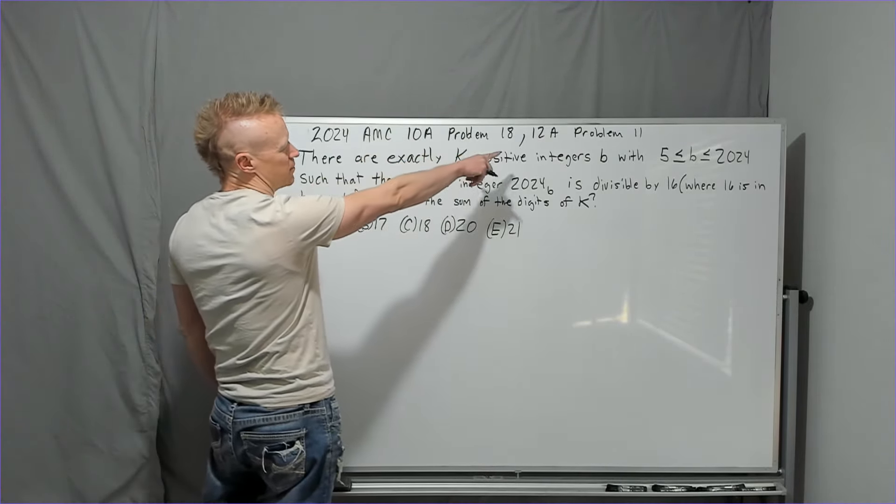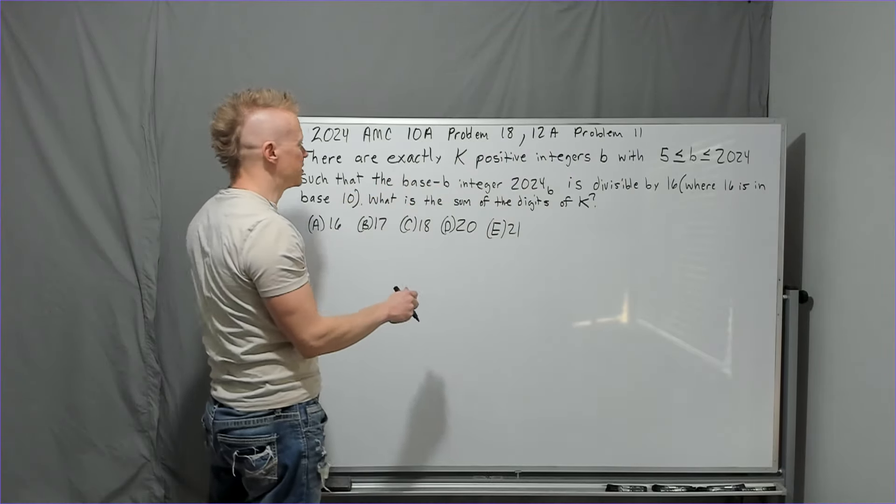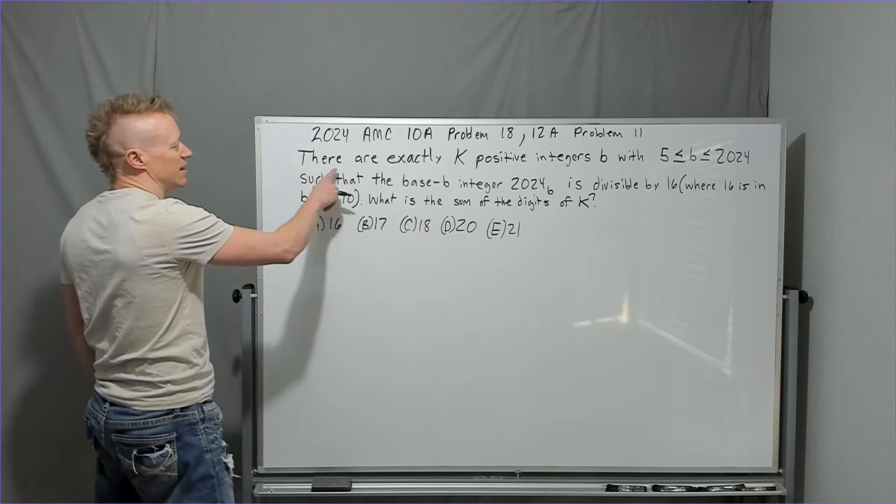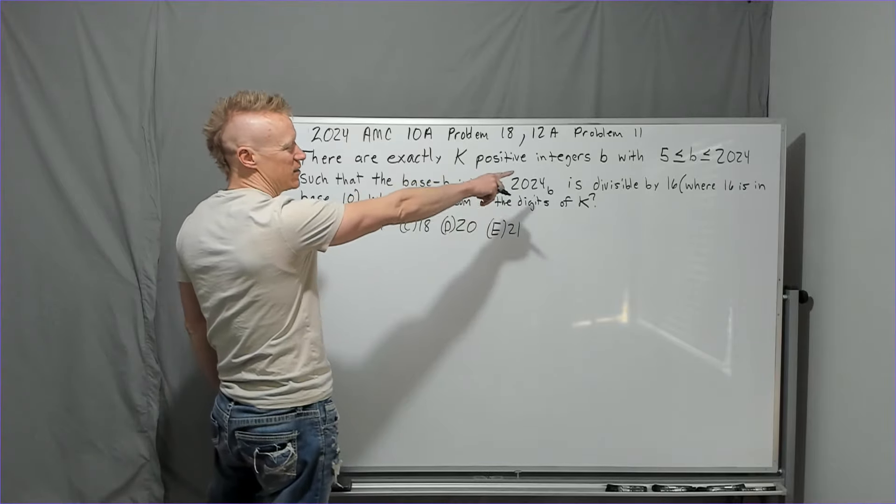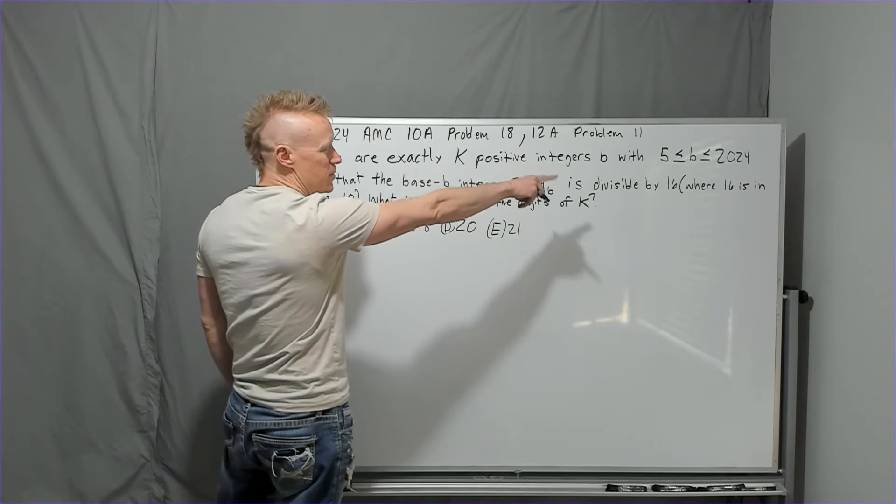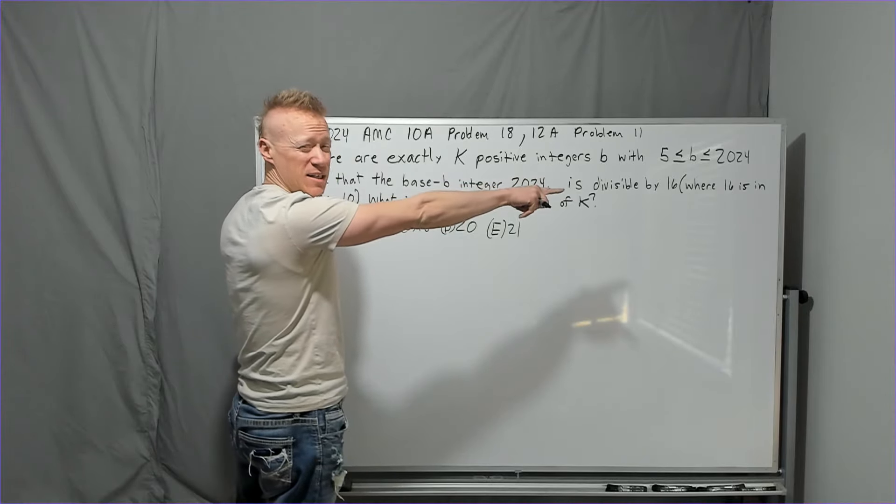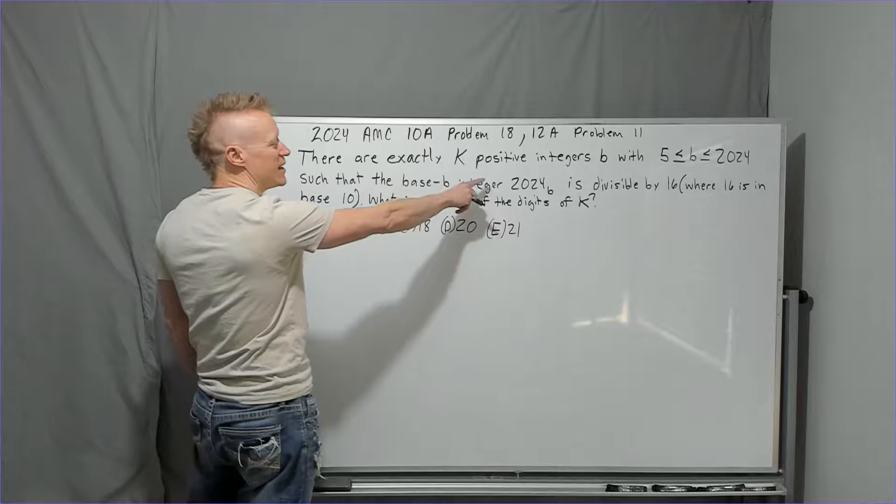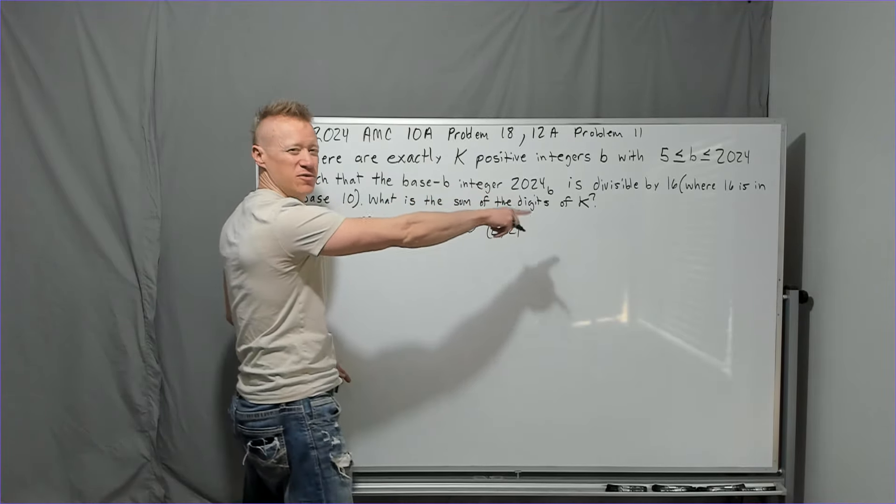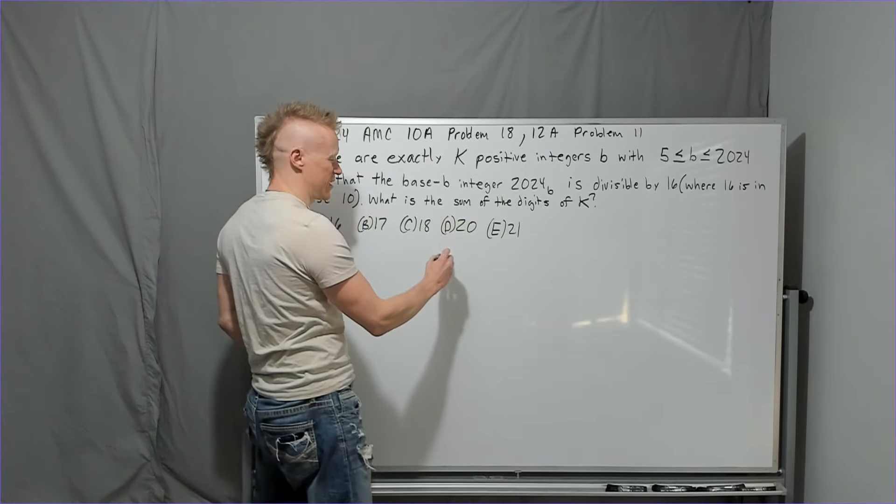2024 AMC 10A problem 18. It was also the 12A problem 11. There are exactly K positive integers B with B between 5 and 2024 inclusive such that the base B integer 2024 base B, which I'm just going to convert right now.